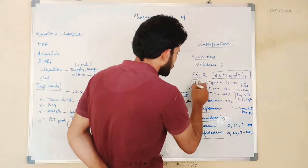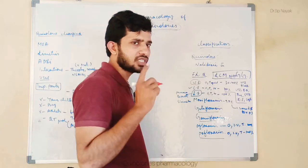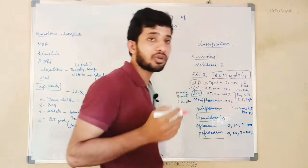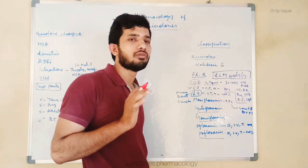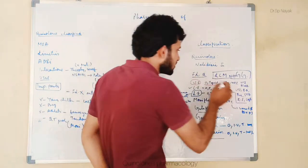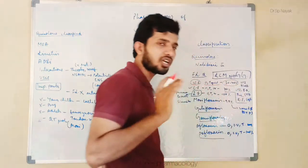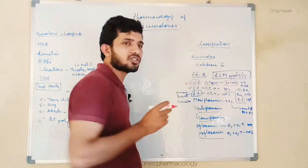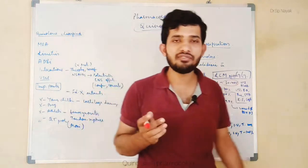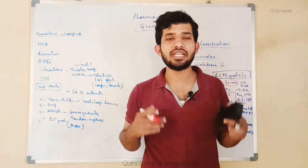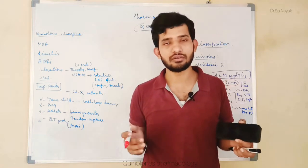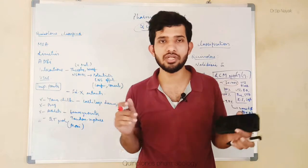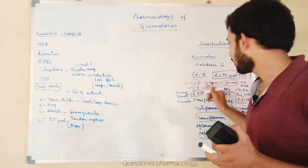Now let's talk about norfloxacin. Norfloxacin is the fluoroquinolone which is available as oral form and topical form — it is not available in IV form. Its bioavailability is only 30 to 40%. It is commonly used for urinary tract infections, bacterial diarrhea, and GI-related bacterial infections.